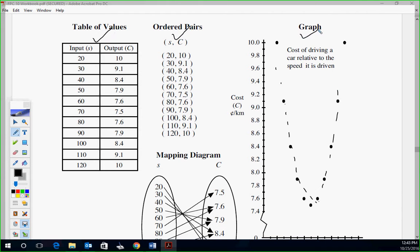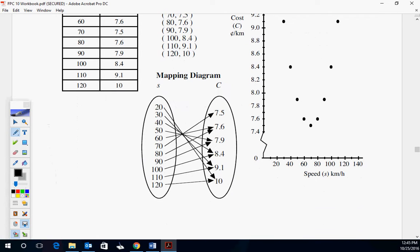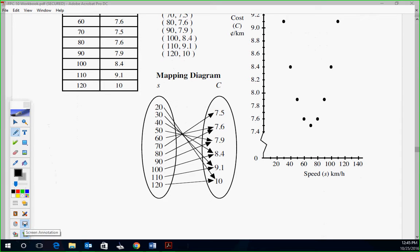Table of values, ordered pairs, graph, mapping diagram. I think you're familiar with the table. Ordered pairs is just x and y. These are points. These are putting the points on a graph. And then mapping diagram is just writing your values and mapping them. So 20 goes down to 10, 120 also goes to 10. Just drawing where it goes in terms of outputs. So that's your four of your different relationships, ways you can demonstrate relations that was mentioned earlier, the seven.